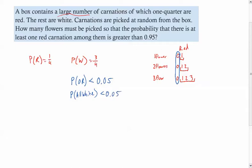Now, another way of saying that, instead of saying zero reds, you could also say the probability of all white needs to be less than 0.05. So if there's less than that, so 0.04, 0.03, that means that having a red is more likely than 0.95. Now, whether there's one red or two reds or three reds, that's besides the point. It really doesn't matter. The question just wants there to be at least one red carnation.